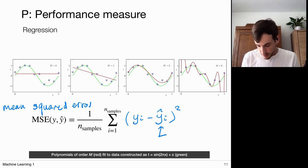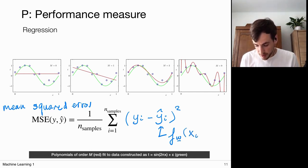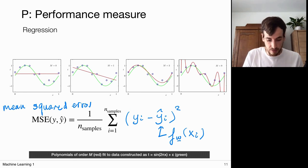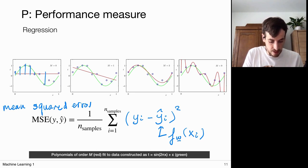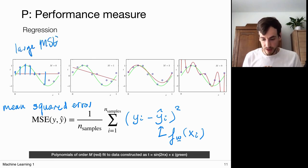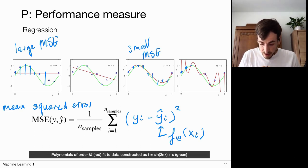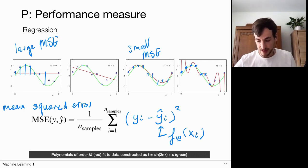This ŷᵢ is a function parameterized by a set of weights w that takes xᵢ as input. Of course this is what we want to optimize. If we look at the differences between the red line and the blue data points in the first example, we'd say this has a large mean squared error. In the third example, the differences are not too bad — a small mean squared error. And in the last case the curve fits exactly through the data points, so the mean squared error is zero.